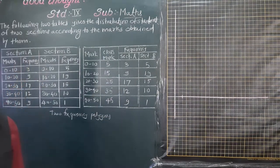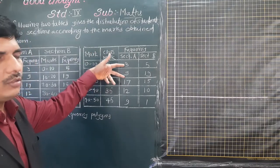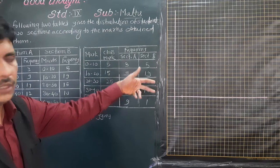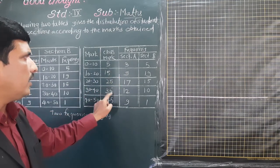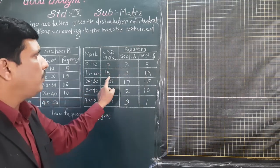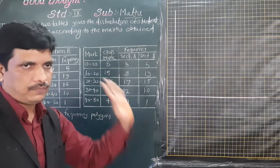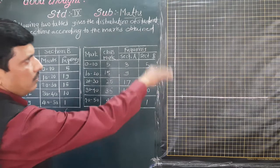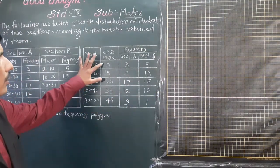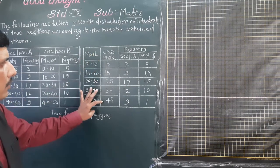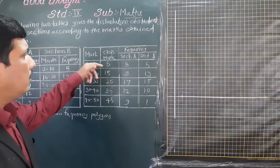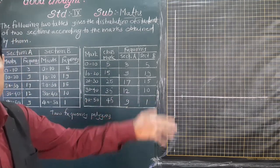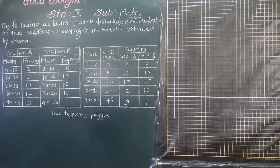Now this is easy to show. We will use two types of lines: a dotted line for Section A and a continuous line for Section B. The plotting points for Section A are: (5,3), (15,9), (25,17), (35,12), (45,9). For Section B: (5,5), (15,19), (25,15), (35,10), (45,1). On the x-axis, the minimum class mark is 5 and maximum is 45, so we extend the scale to about 55 or 60.